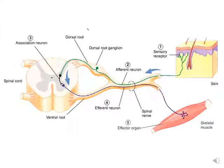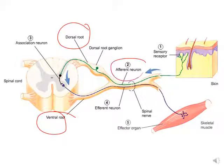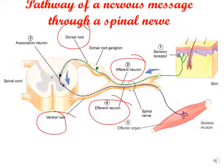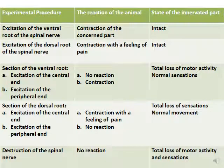Now we discuss the dorsal root and ventral root of the spinal nerve. The dorsal root is afferent (sensory) and the ventral root is efferent (motor). In this important experiment: excitation of the ventral root results in contraction, while excitation of the dorsal root results in contraction with the feeling of pain.